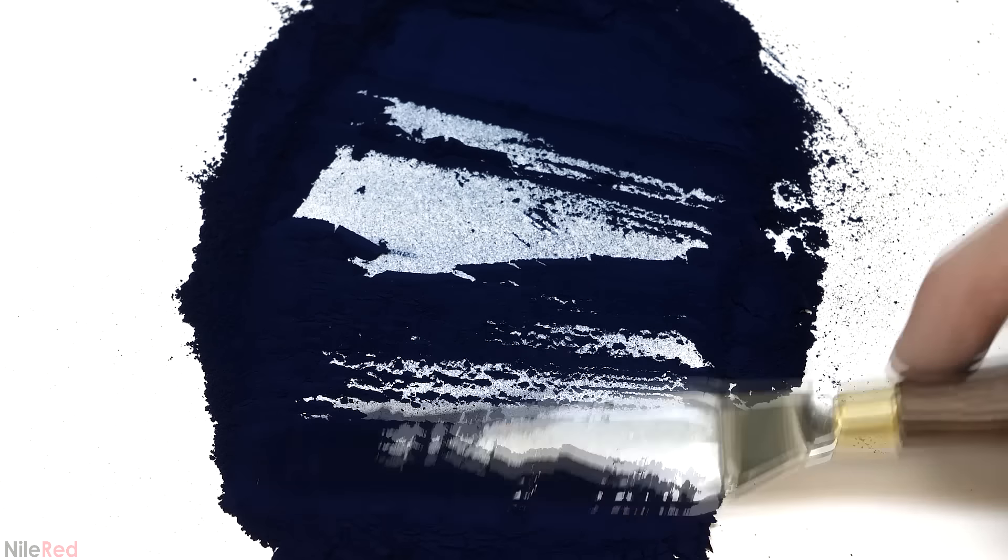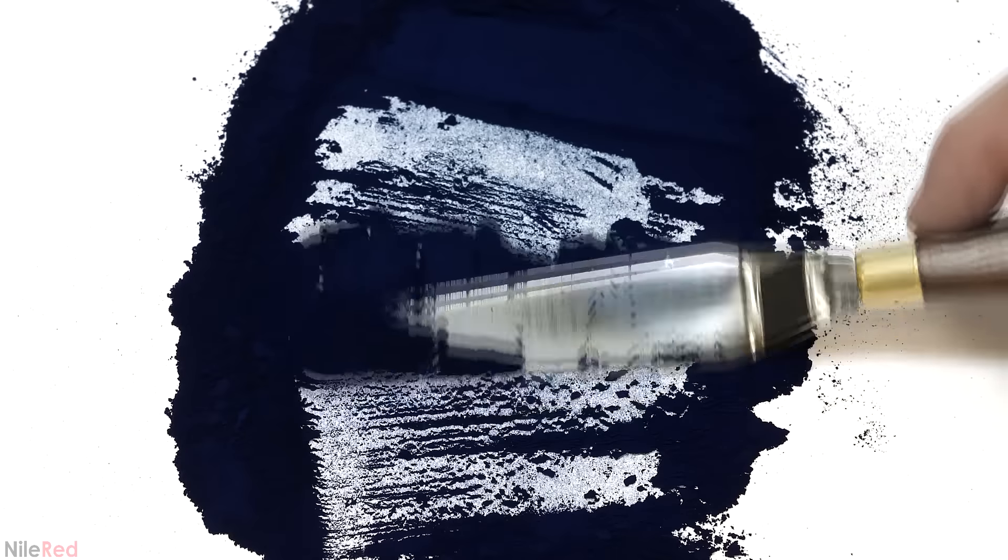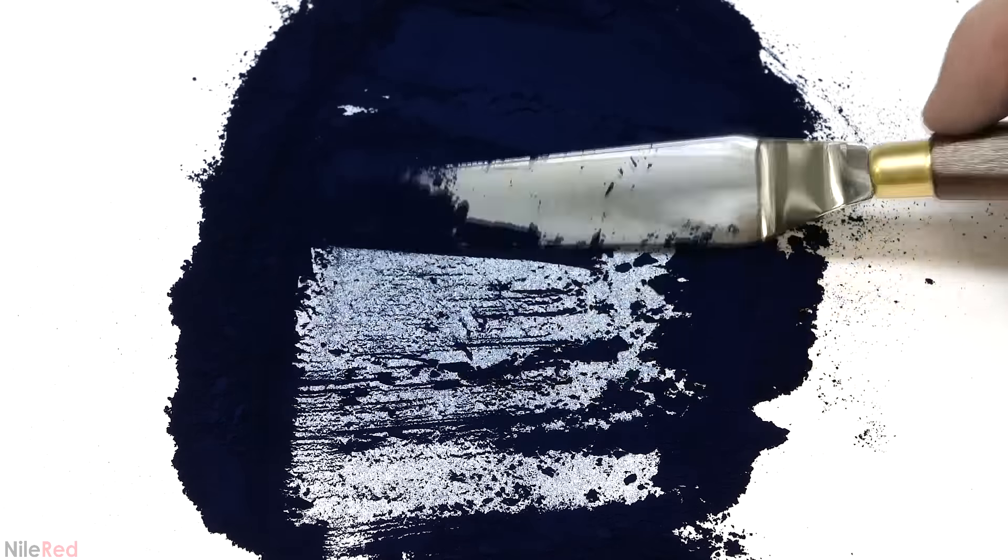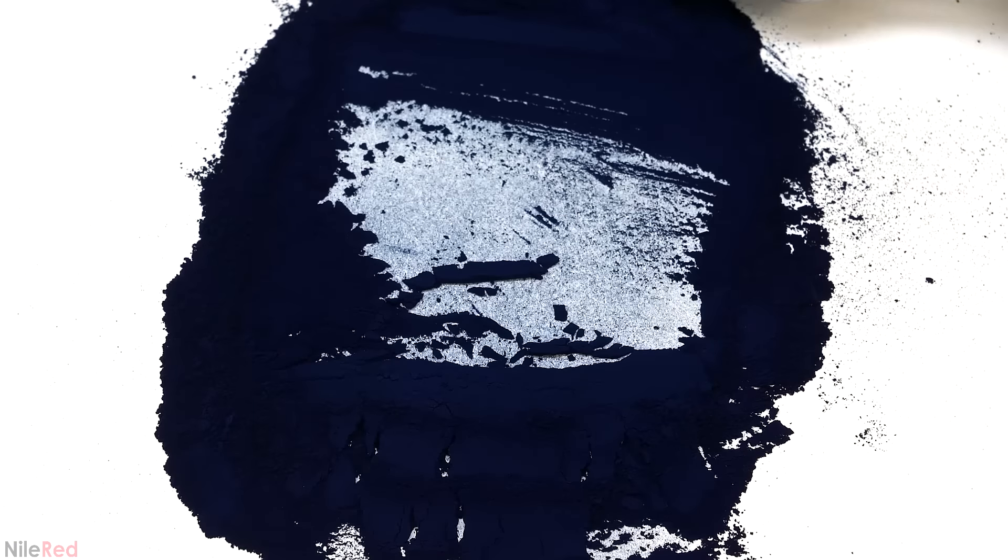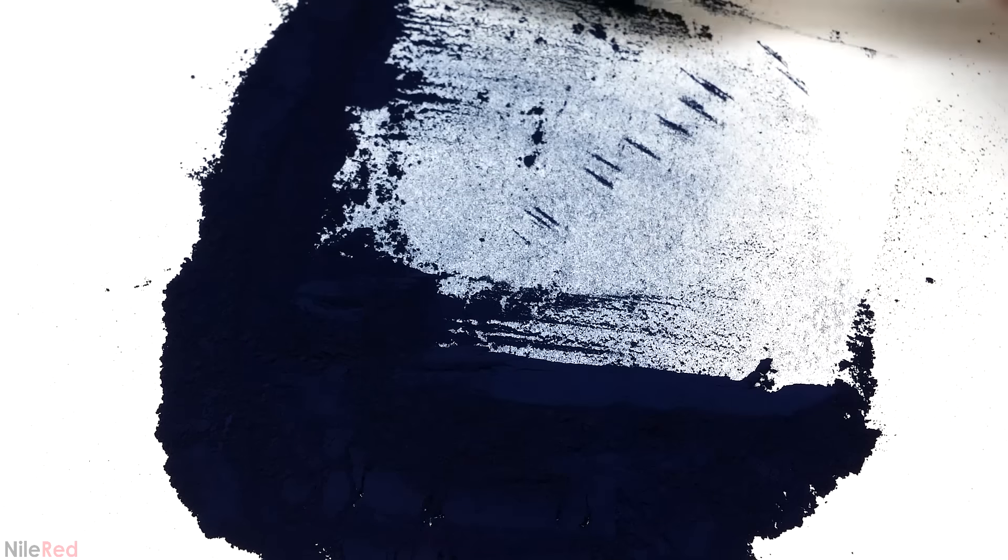In a previous video I made some nice Prussian blue pigment and showed how it can be used to color things like paint. This time though, I'm going to be exploring a more specialized use for it, which is in a process called cyanotype.